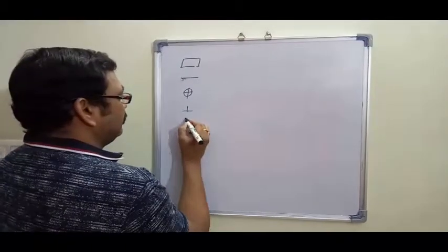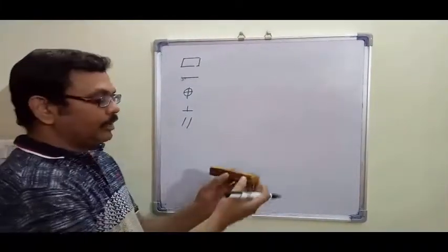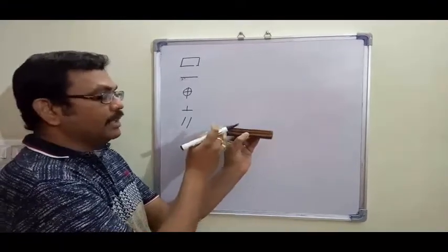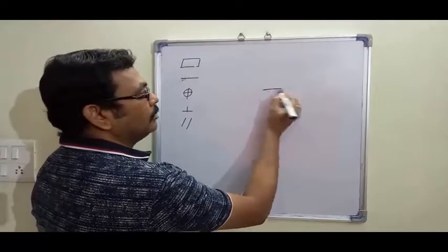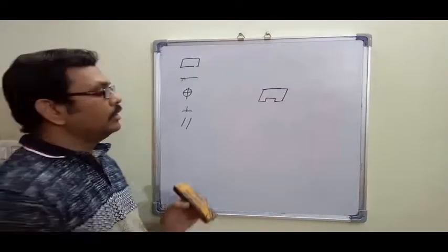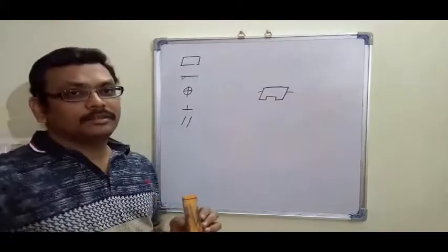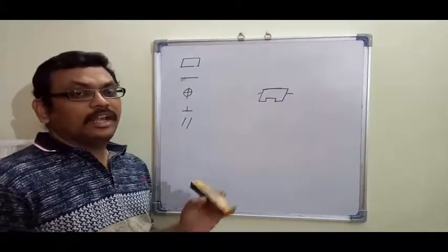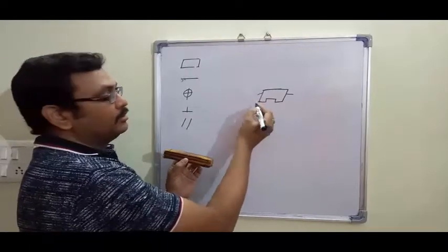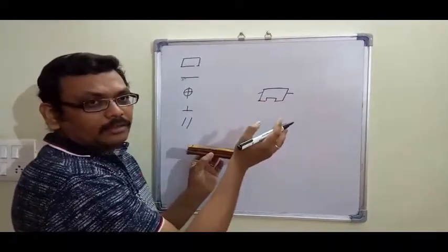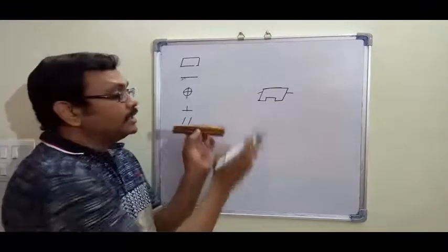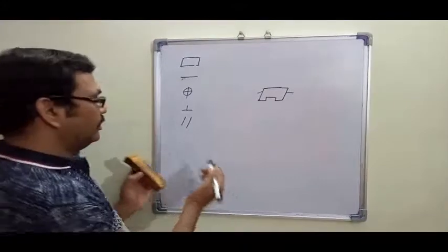Parallelism — how much this line and this line should vary or should be parallel. In some components, lines are not perpendicular but are inclined and parallel, so we can't use perpendicularity. We have to use the parallelism symbol to define how much tolerance can vary with respect to that parallel relationship.